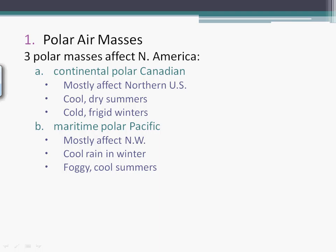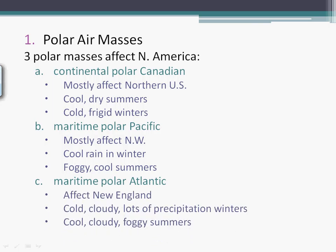Maritime Polar Pacific — this is the Northwest: cool, rainy winters and foggy, cool summers. We're thinking the Pacific Northwest — Washington, Oregon, Idaho, and Northern California. Maritime Polar Atlantic — this is the New Englanders. Cold, wet winters because moisture is coming off the Atlantic Ocean; cool, foggy summers for the same reason. We're talking Maine, Rhode Island, all the way down to parts of New York.